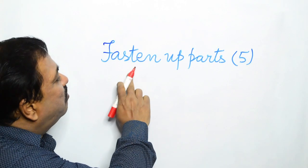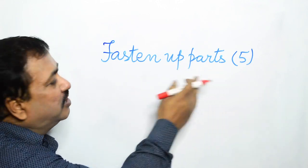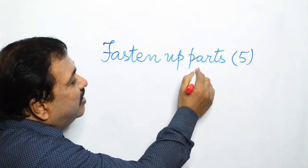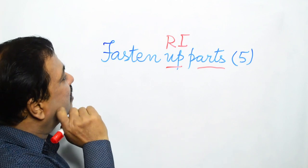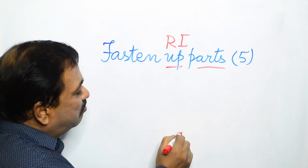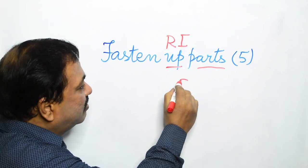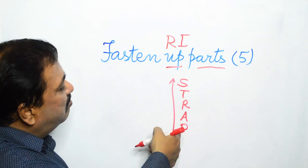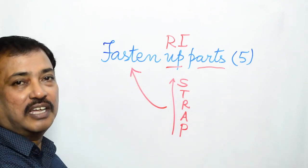Again, a down clue: Fasten up parts. You can think as fasten up parts or fasten up parts. But the requirement is a five letter word, so obviously this has to be reversed, and this is the reversal indicator. So what you do? You write from bottom to top P-A-R-T-S. Parts going up, and we get the word strap, which means to fasten. And our answer.